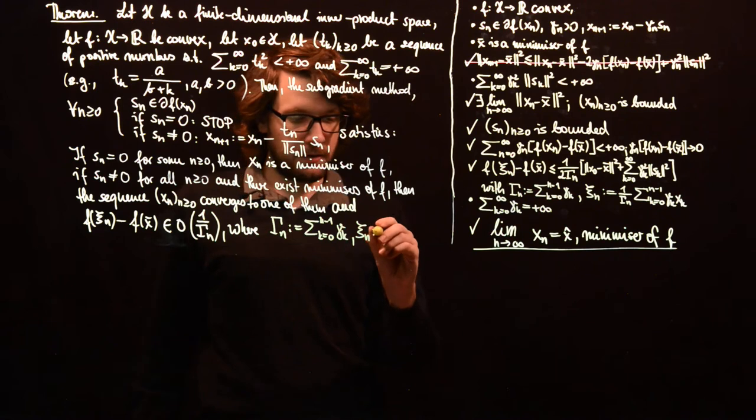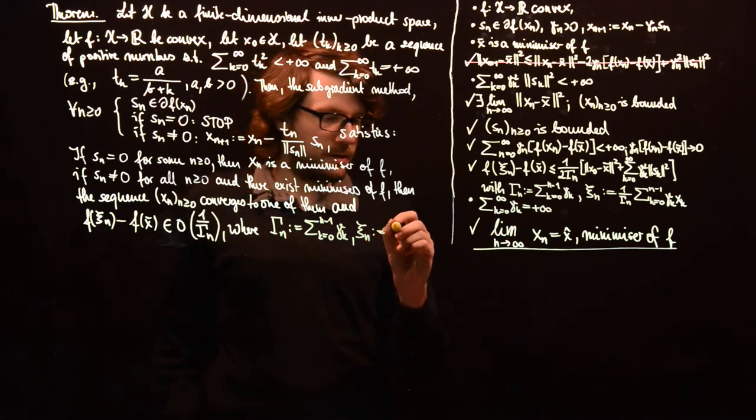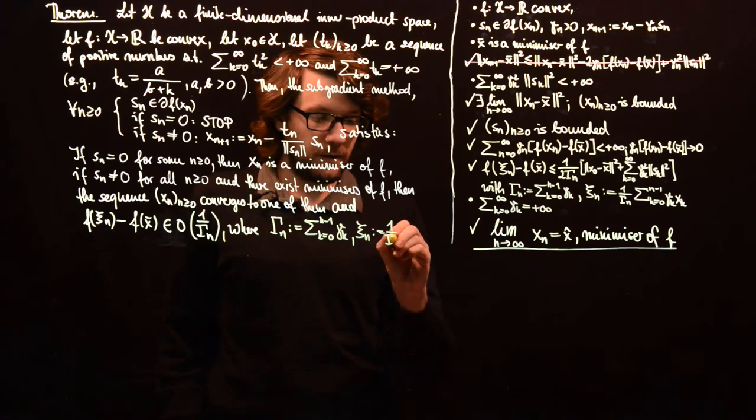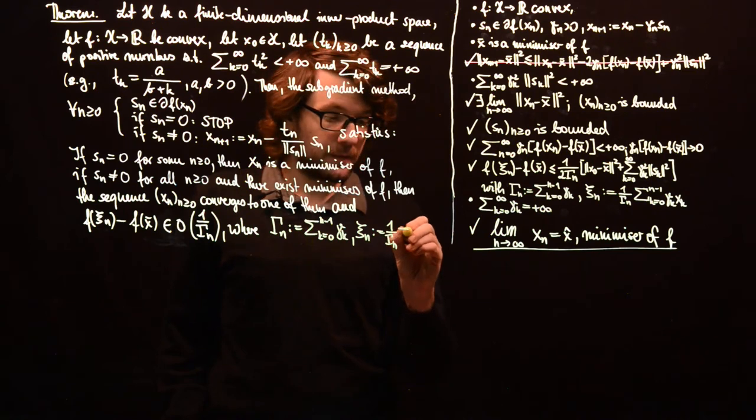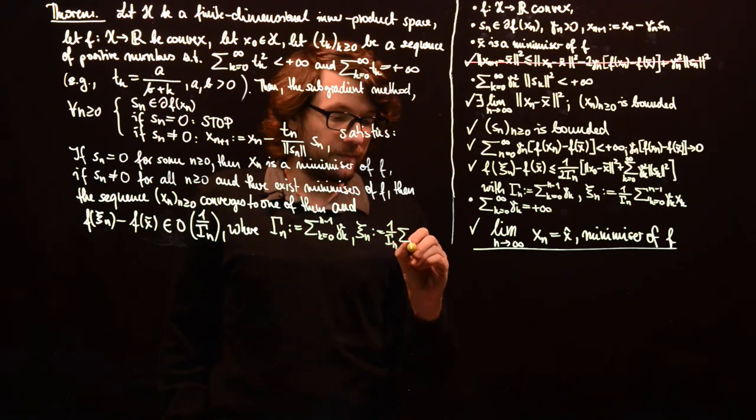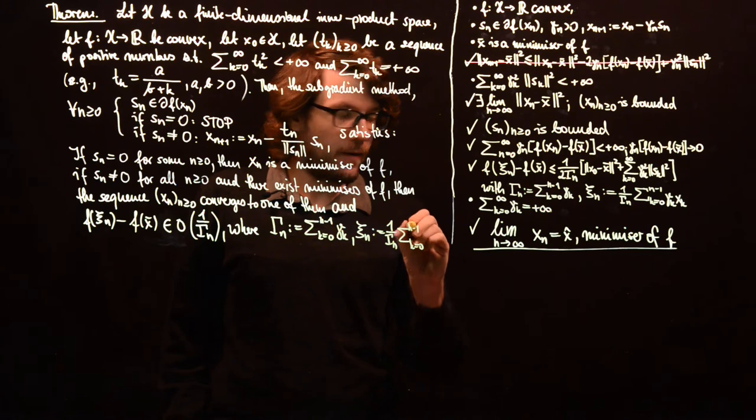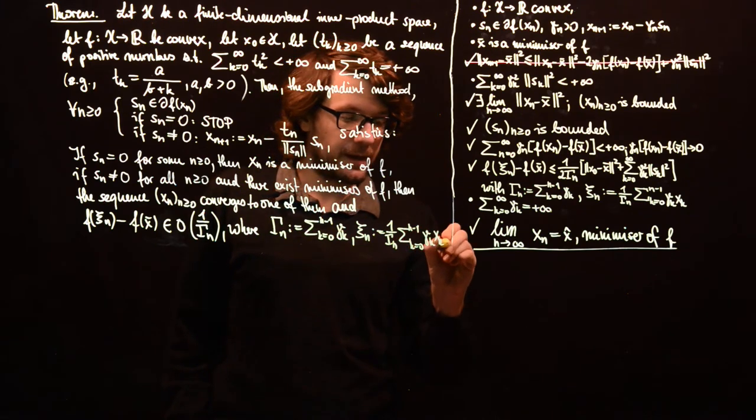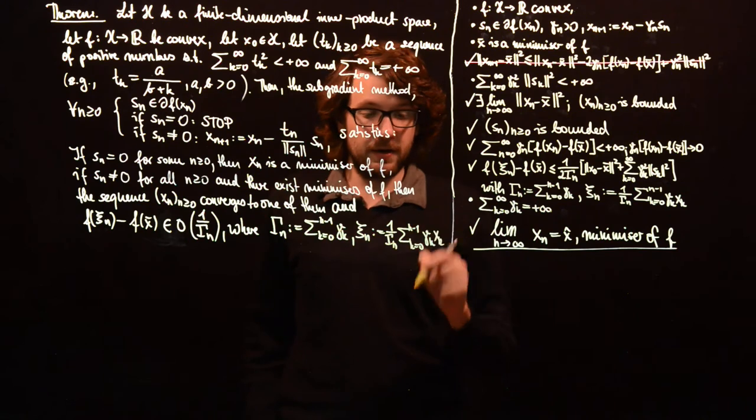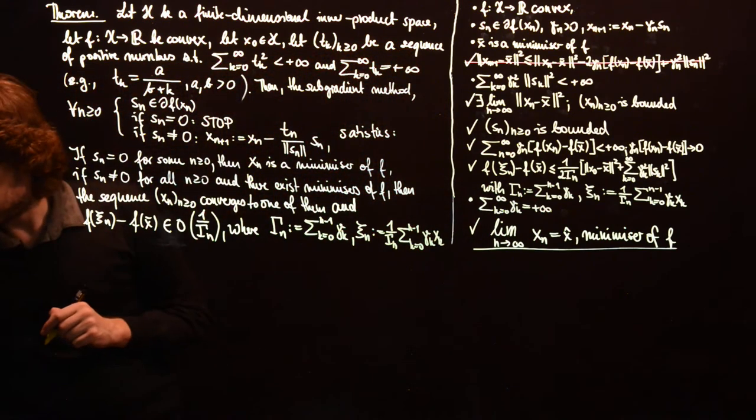And the capital gamma of n is just defined as the sum of the gamma_k from 0 to n minus 1. And psi_n, this is this point, is just 1 over gamma_n sum of gamma_k x_k from 0 to n minus 1.